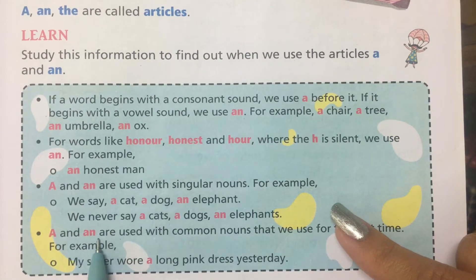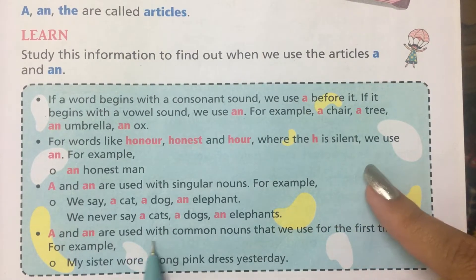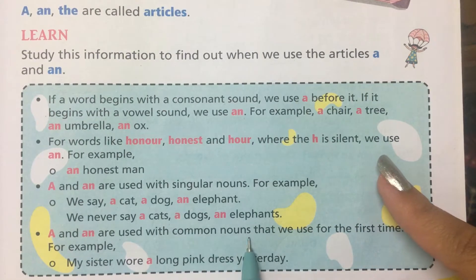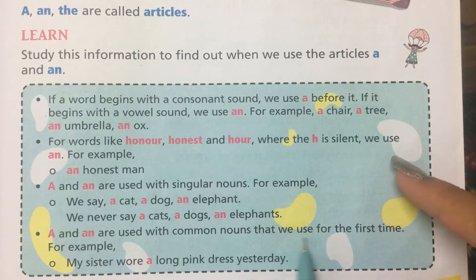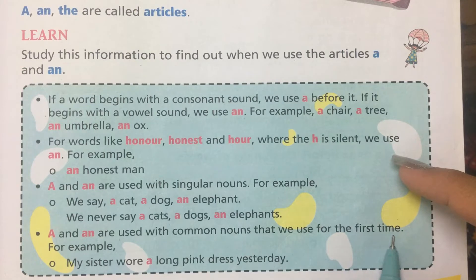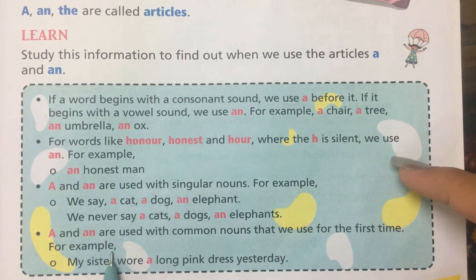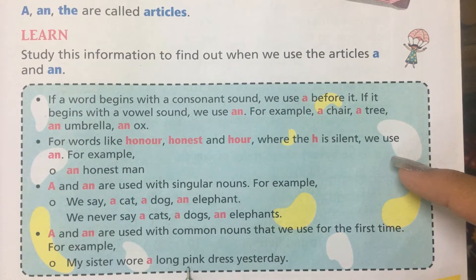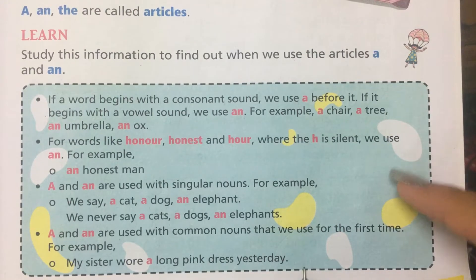A and An are used with common nouns — nouns that we use for the first time. For example: my sister wore a long pink dress yesterday.